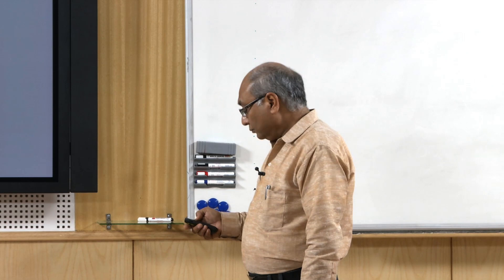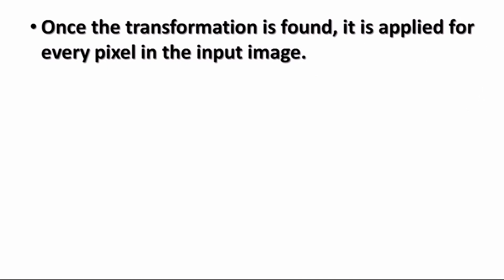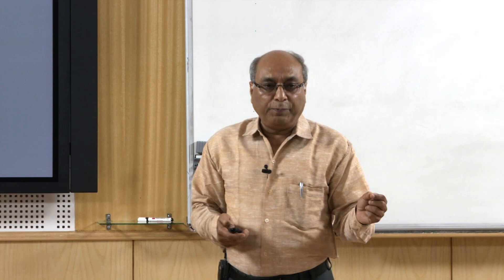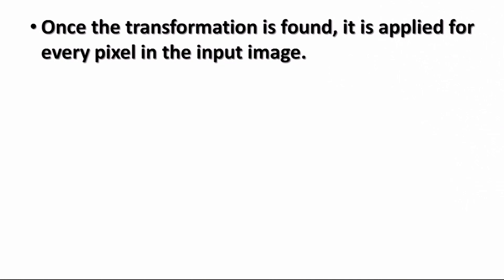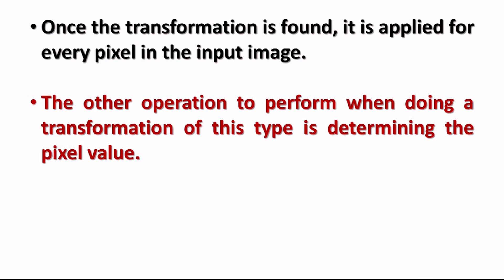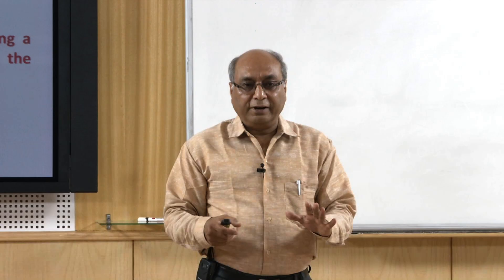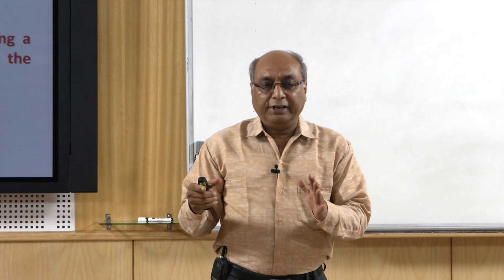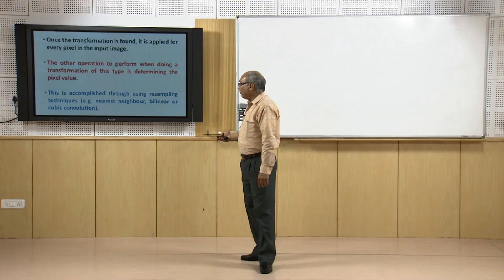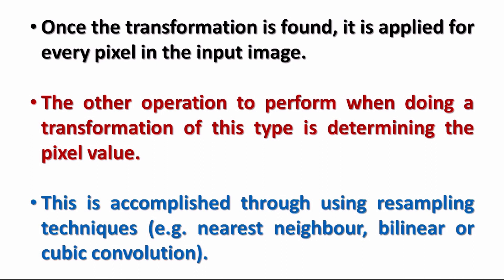Once the transformation is found, it is applied to every pixel in the input image. We know which pixel needs to be shifted where. One additional operation when performing this type of transformation is determining the pixel value — that is the third step. Once we know which pixel goes into the target georeferenced image, we must also decide what value it carries, and that is done through resampling. In some literature the word interpolation is used, but this is not exact interpolation; resampling is the more appropriate term.